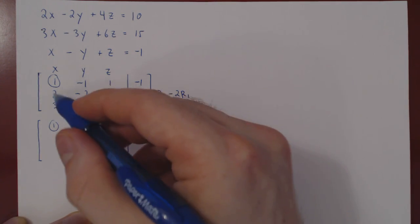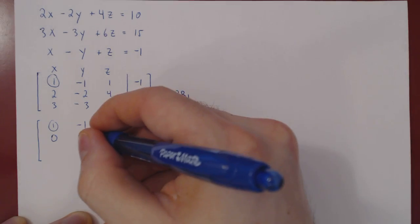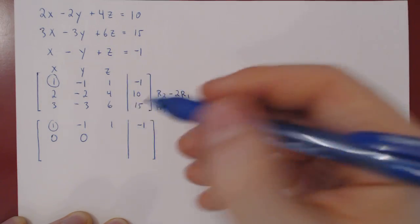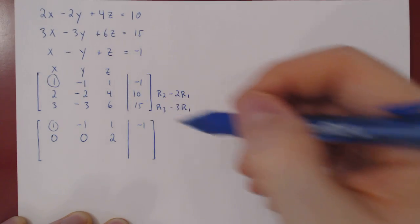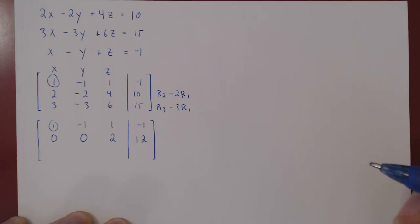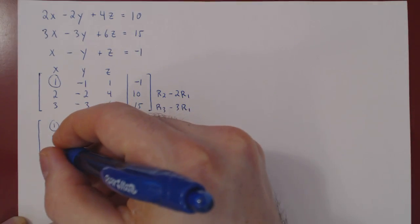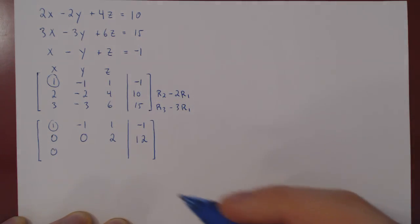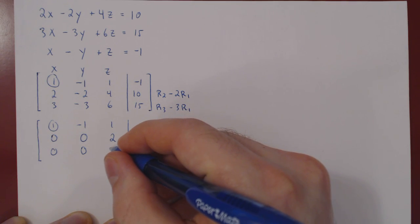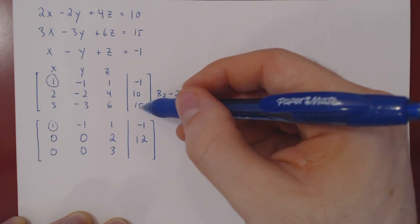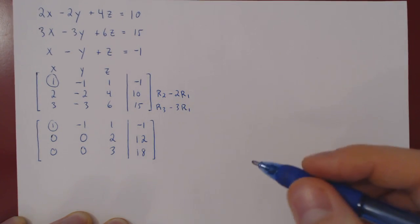Applying the first row operation: two minus two is zero; negative two minus two times negative one is zero; four minus two times two is zero; ten minus two times negative one plus two gives twelve. Second row operation: three minus three is zero; negative three minus negative three times negative one is zero; six minus three times two is zero; and fifteen minus three times negative one plus three gives eighteen.